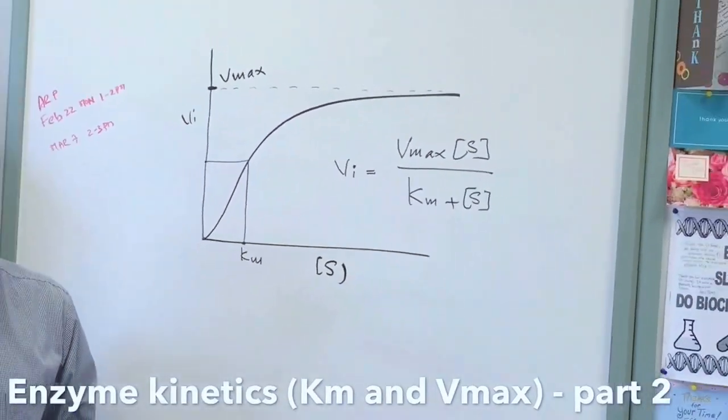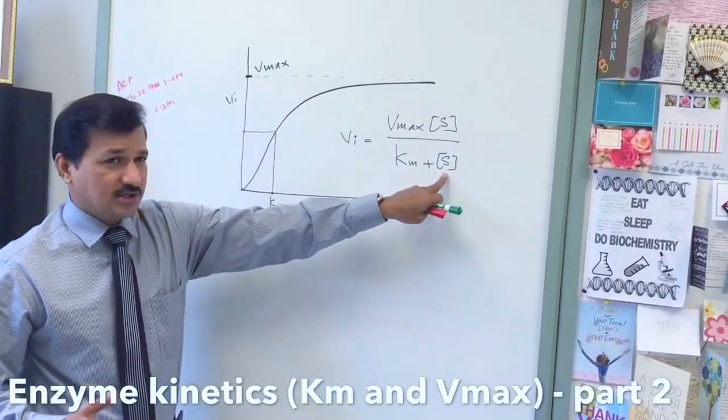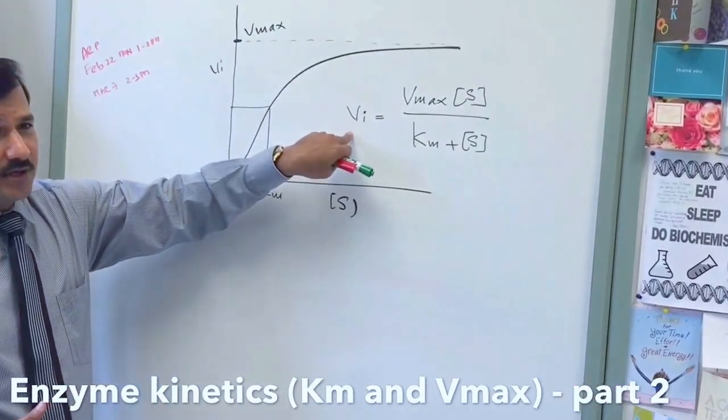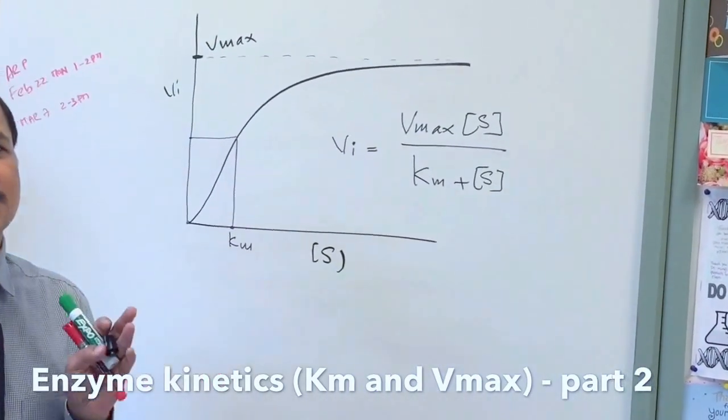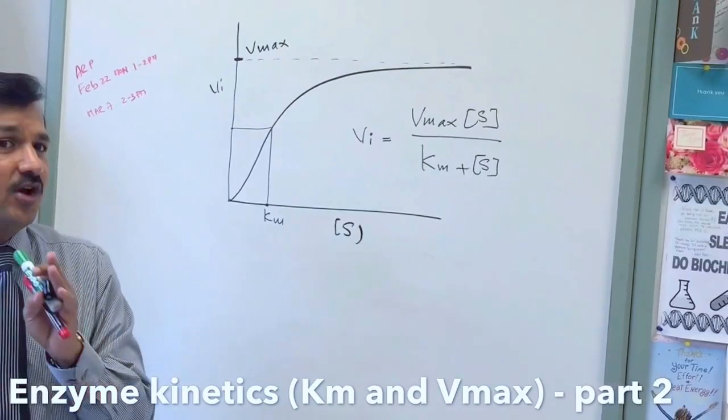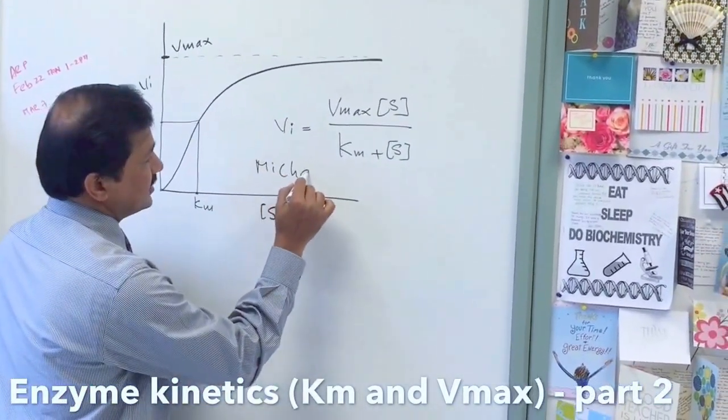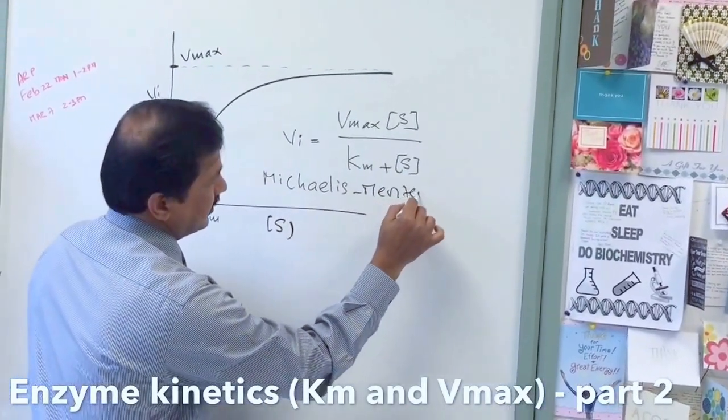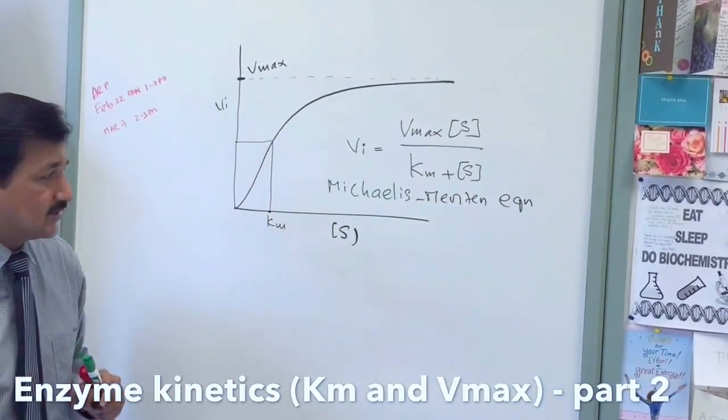Now this particular equation can be used to calculate Km of an enzyme, substrate concentration for enzyme, or initial velocity of the reaction for that particular enzyme. Also this equation can be used to calculate transport velocity for membrane transporters, which will also follow Michaelis-Menten equation. This is Michaelis-Menten equation.